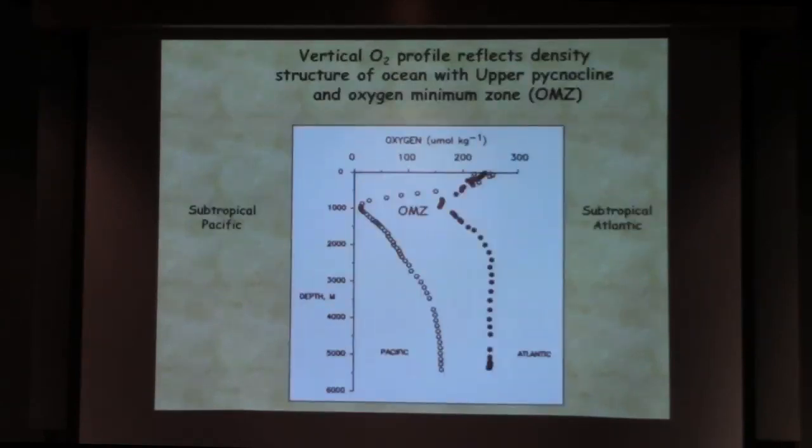If you look at oxygen, you see a very similar type of effect. The Pacific, which is in open circles, gets really low oxygen concentrations at this depth. This is called the oxygen minimum zone of the ocean, sitting at about 500 to a thousand meters, and then the oxygen levels sort of start to increase.